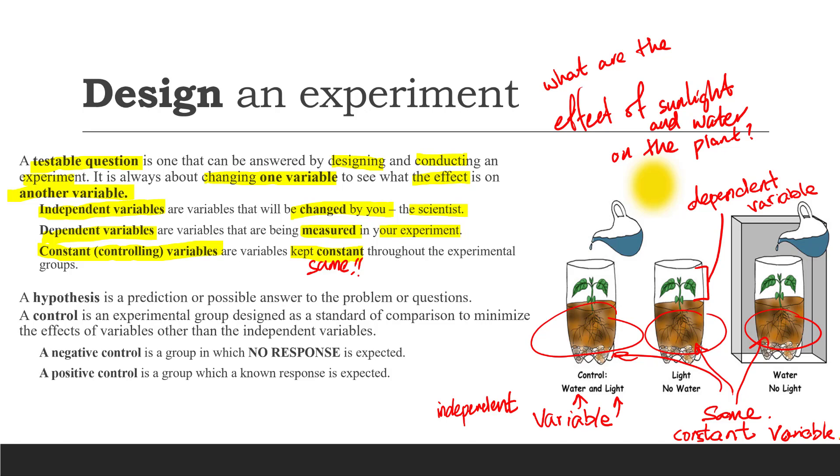These variables have to be kept the same among all experimental groups, because by then we can be very certain that any effect on the growth of the plant is only due to water and light. Then we can make a hypothesis based on our experiment. A hypothesis is a prediction or possible answer to the problem or question. We could hypothesize that without water and light, there will be no growth on the plant. To ensure that our observation is solely due to our independent variable, we need to create a control.